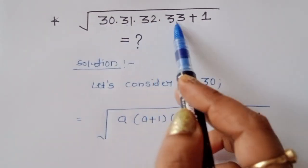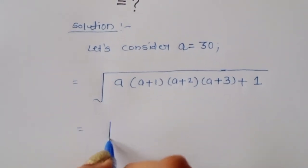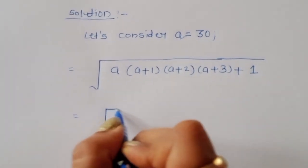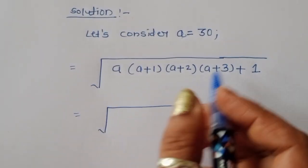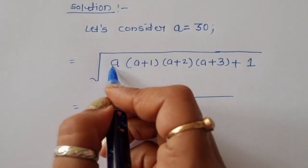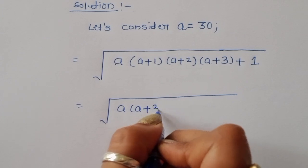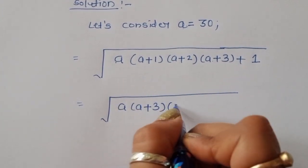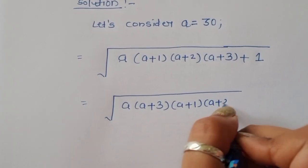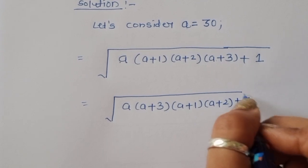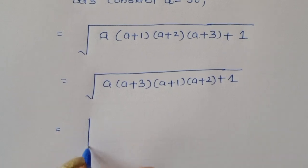So we have a times (a+1) times (a+2) times (a+3) plus 1. Now we rearrange the terms: we group a times (a+3) together, and separately (a+1) times (a+2), plus 1.